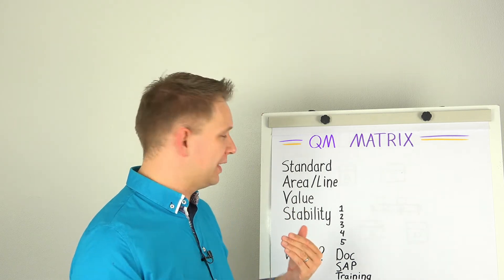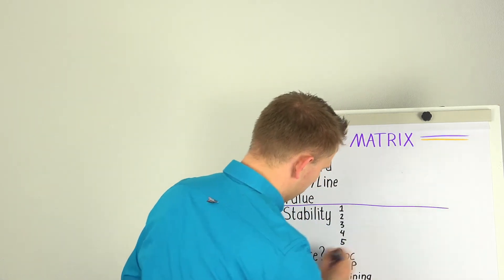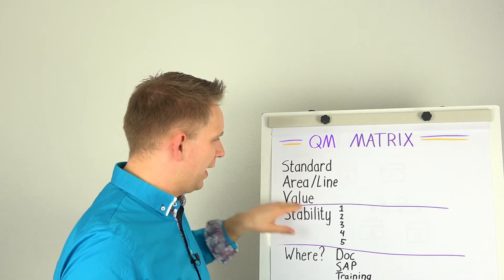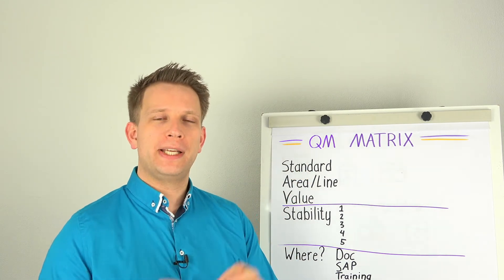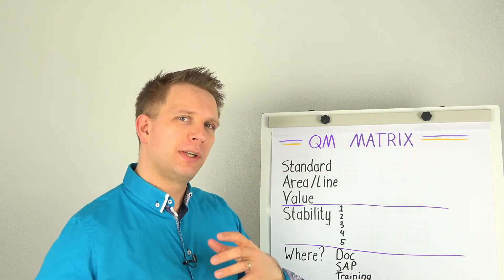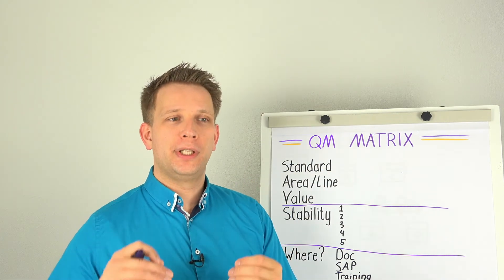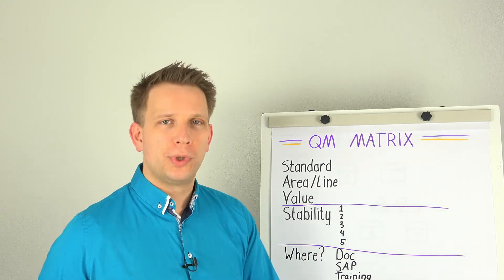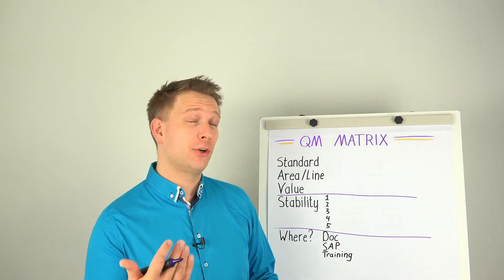You sort of split this out. The top part, especially where is the what value do we have, this really belongs to the owner of each quality parameter. Try to limit it to the department or specific people who own this standard.